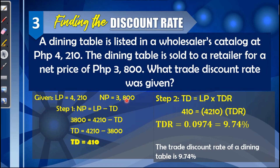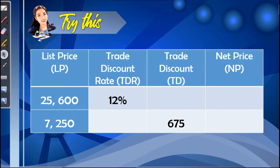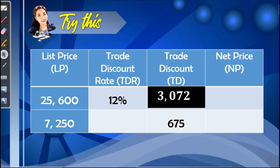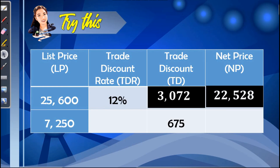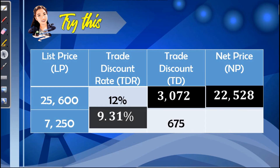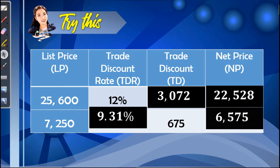After discussing how to solve trade discounts using the discount method and complement method, it is now time to check our understanding. Kindly complete the table by finding the missing terms — you may pause the video to answer. Let's check our work: the trade discount is 3,072 and the net price is 22,528. Next, the trade discount rate is 9.31%, and the net price is 6,575.